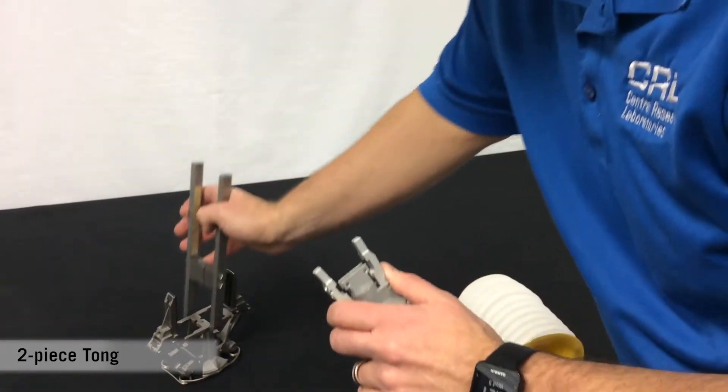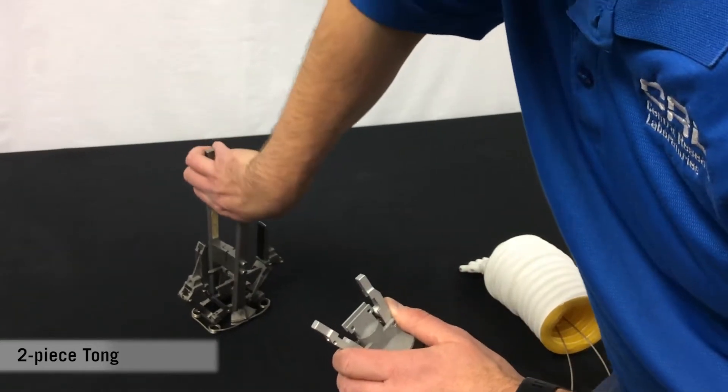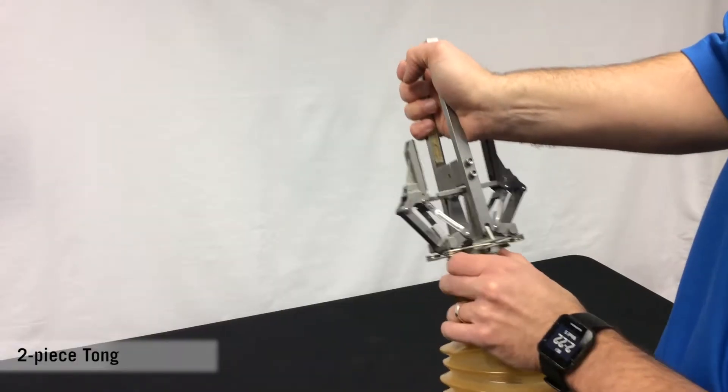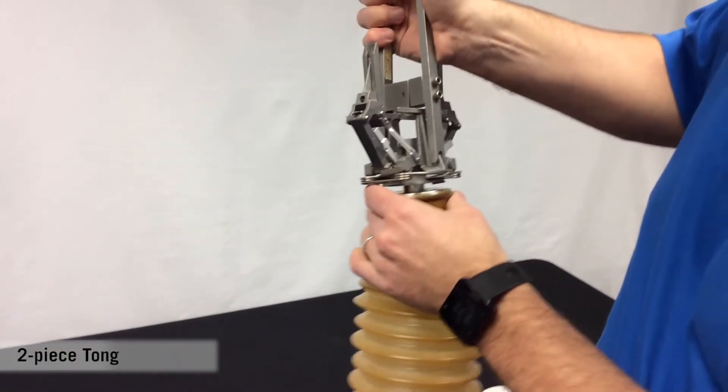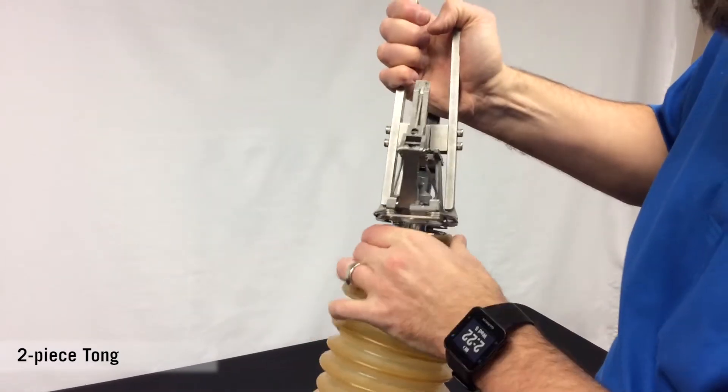The tong attaches inversely to how it got removed. Install it in an inverse backwards way of how you got it off.